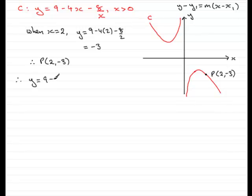y equals 9 minus 4x. Now, minus 8 over x can be written as minus 8 times 1 over x. And 1 over x is x to the power of negative 1. So we should be in a form for differentiating now.